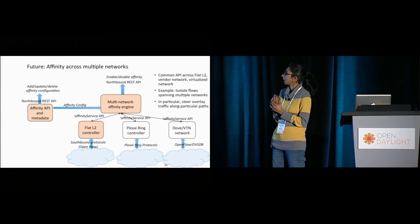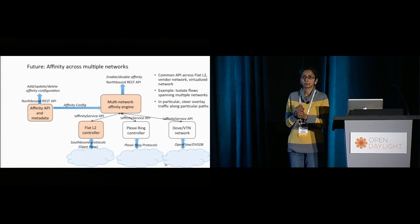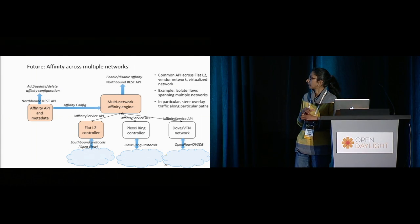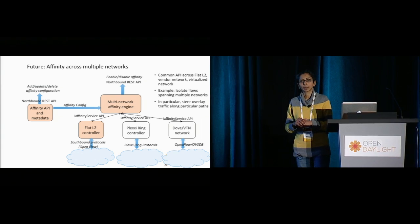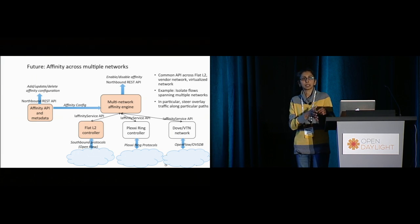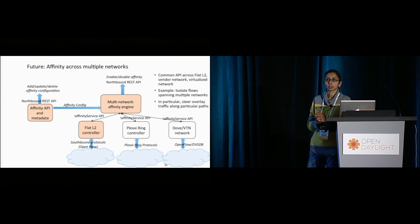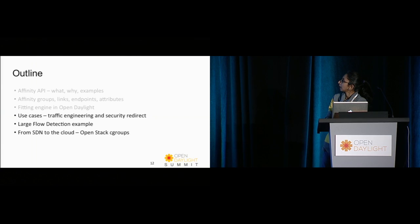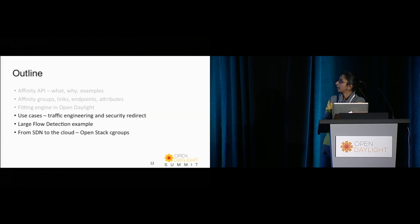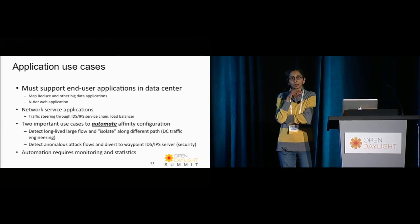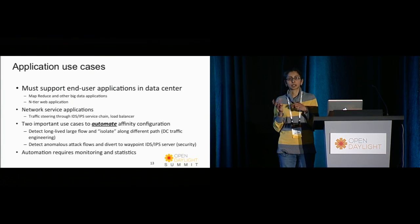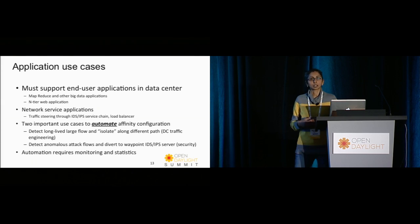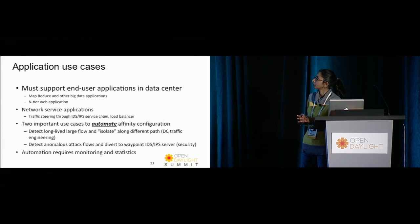When combining a DOVE/VTN network with a Plexi ring, DOVE establishes overlay tunnels, and one important function we can provide is steering overlay traffic along particular paths — adapting what we did for native Layer 2 SDN to a tunnel-oriented overlay SDN. Our primary focus at Plexi has been the data center, developing use cases relevant to large data centers and virtualized clouds, though service provider use cases would be equally interesting.